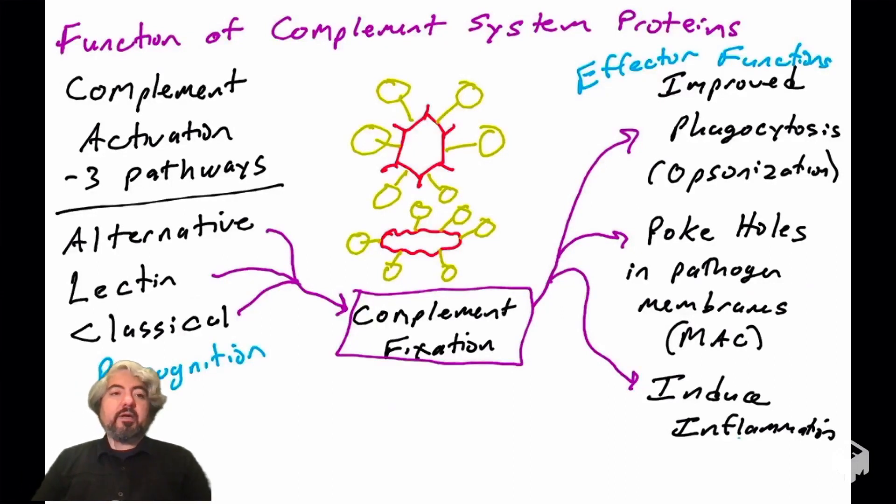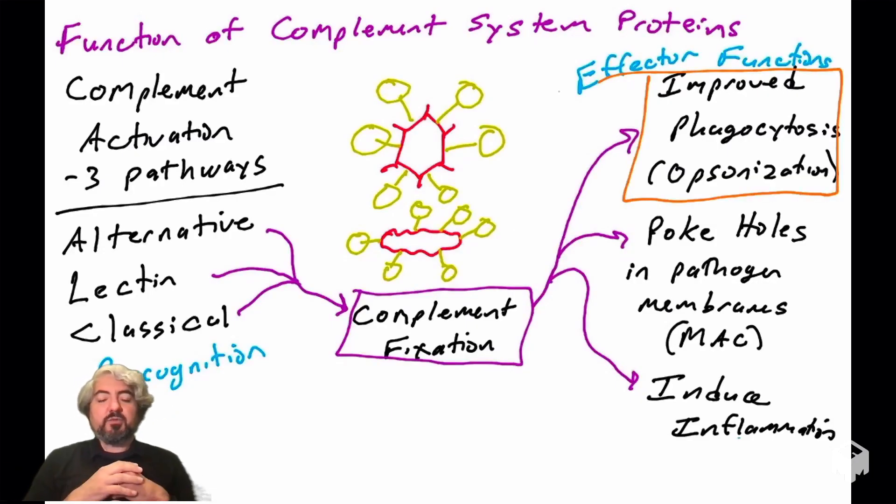While we're talking about complement and how complement functions to help remove pathogens from the body, the effector functions, now's a good time to introduce one of the effector functions and how it works. The effector function we're going to talk about here is opsonization, or how complement activation leading to complement fixation can help improve phagocytosis. That is the process of opsonization and one of the effector functions of complement.